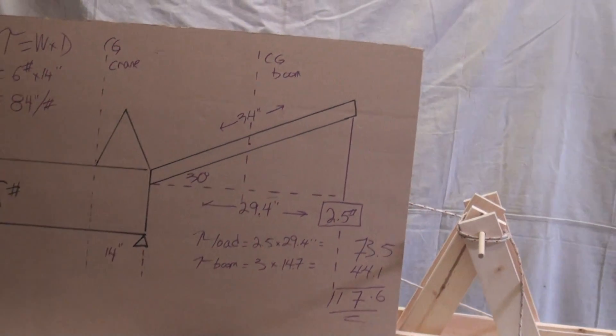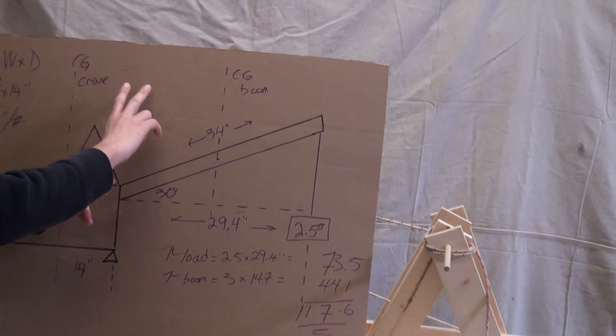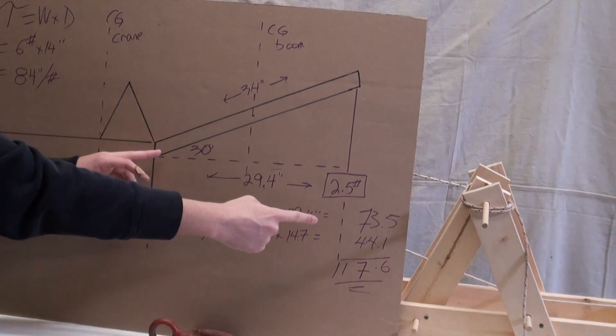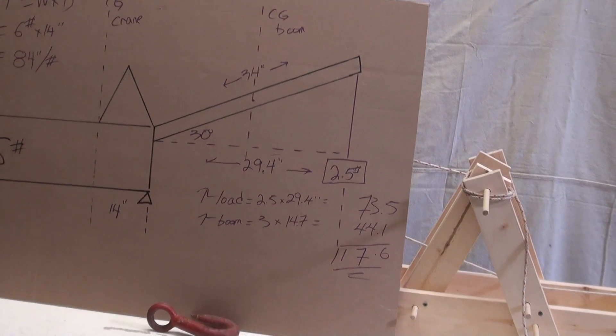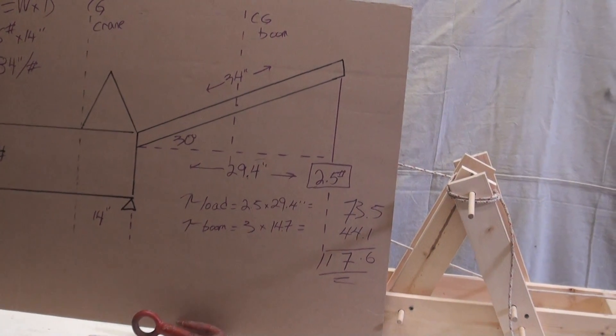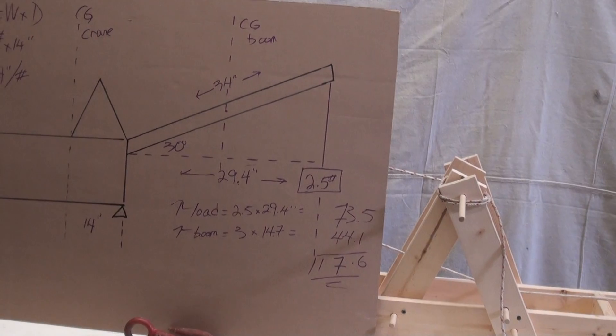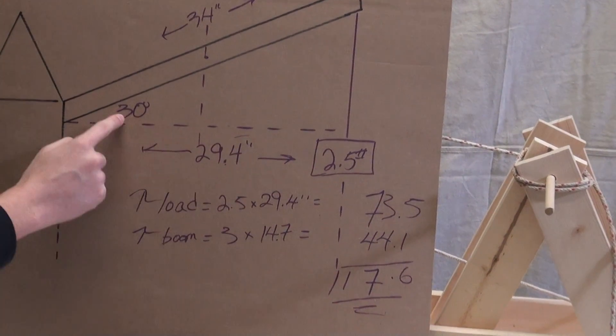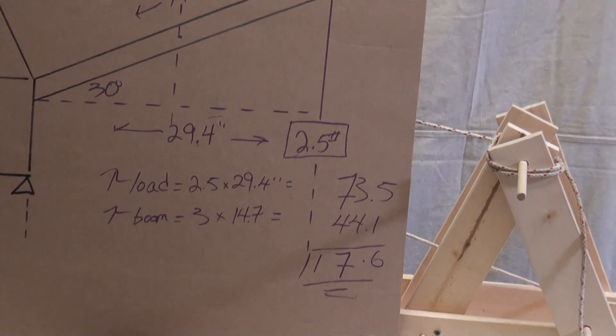But the boom is now at 30 degrees. By making it 30 degrees, that makes the center of gravity of both the boom and the load further away. The weights don't change, but the distance does, which increases the torque. Now there will be a link to another video to explain how we got these new numbers: 29.4 inches and 14.7 inches.